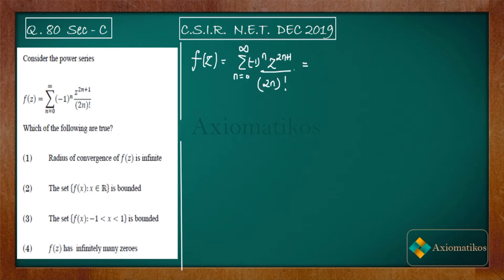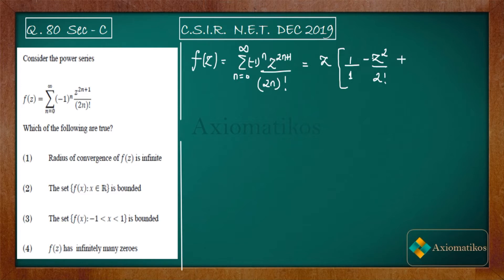If we take z outside, let us open this series. We will get: (−1)^0 = 1, z^0 = 1, over (2·0)! = 1. Then the second term will be minus z² over 2!, then z⁴ over 4!, then z⁶ over 6!, and so on.